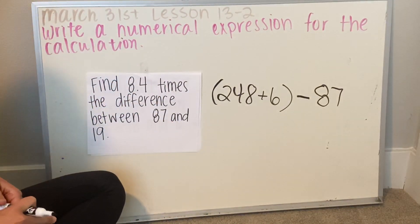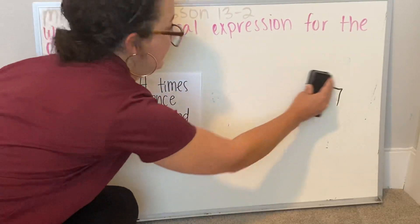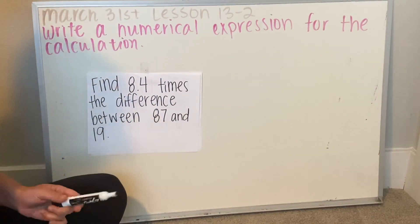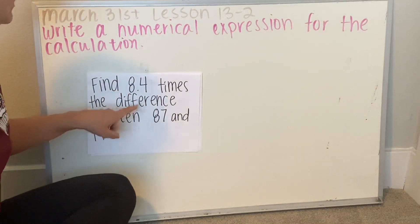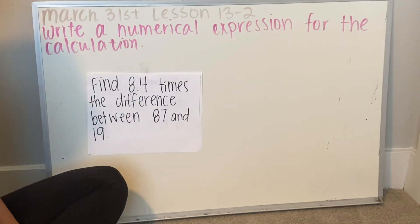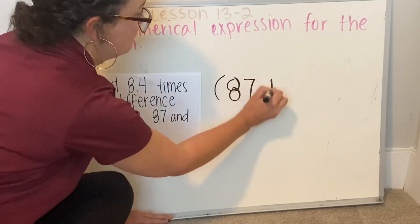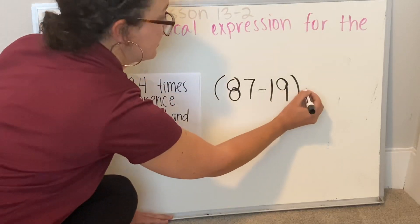Find 8 and 4 tenths times, keyword, that's a keyword, times the difference between 87 and 19. Now, if you watch the video before this, you learned that the difference meant the answer to a subtraction problem. So 87 take away 19 is going to be my first step, and then I'm going to times 8 and 4 tenths.